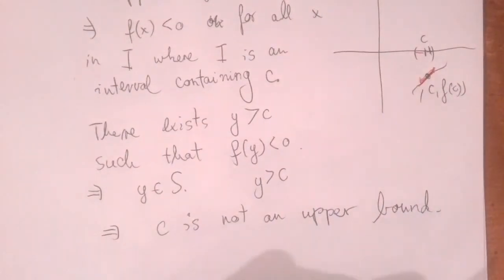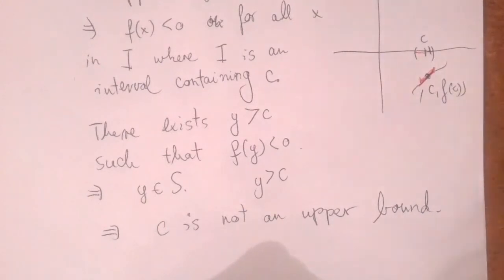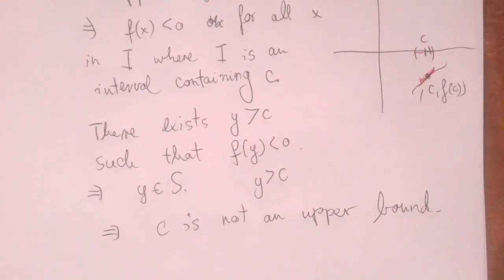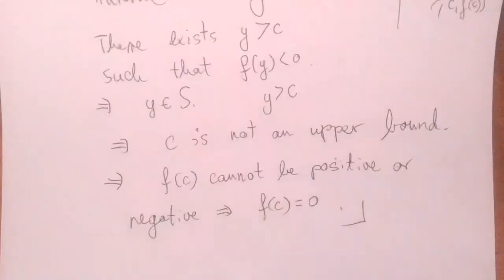We have a function that is continuous at the point c, because it is continuous on the entire interval a, b. Therefore f of c is defined, and it's a number that is not positive and not negative. Therefore, f of c must be zero.